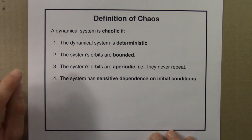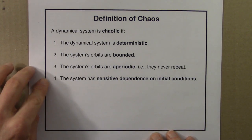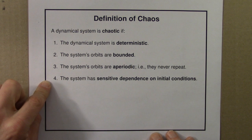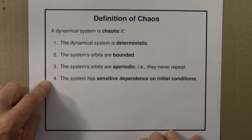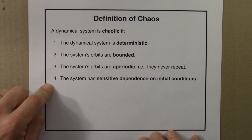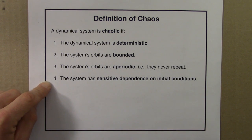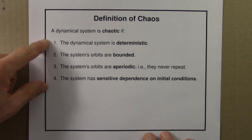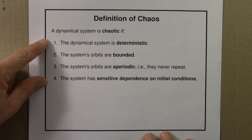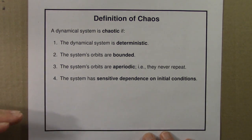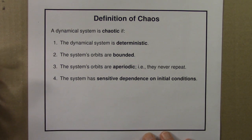The last criterion for something to be chaotic is that it has to have sensitive dependence on initial conditions, in the sense that we've just been talking about. So if a dynamical system has these four properties, then in physics or math we'll say it's chaotic.